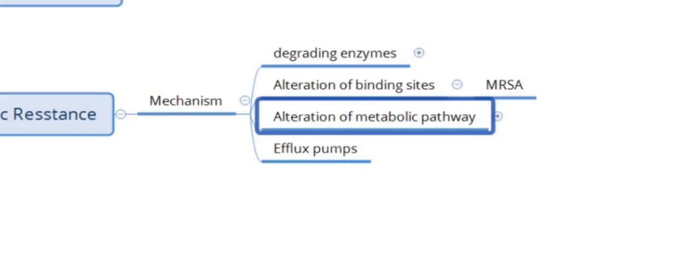The fourth mechanism is efflux pumps. The antibiotic enters the bacterial cytoplasm, the bacteria senses it as an antibiotic and opens the efflux pump, which pushes the antibiotic back out into the exterior environment. A typical example is efflux pumps that operate in fluoroquinolone-resistant bacteria. The bacterial cell thus remains free from the antibiotic — that is the mechanism of antibiotic resistance in bacterial pathogenesis.